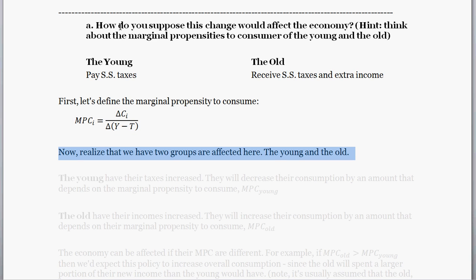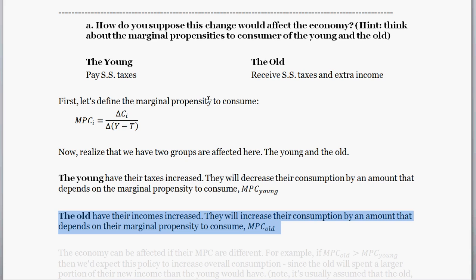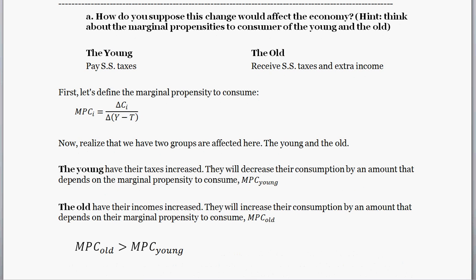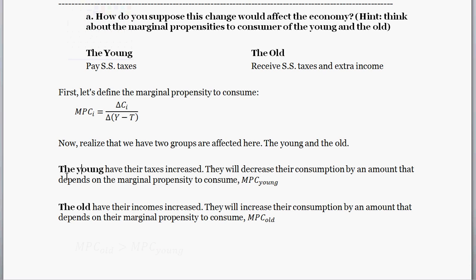There are two different groups: the young and the old. The young have their taxes increase, so they decrease consumption by an amount that depends on their marginal propensity to consume. The old have their incomes increased and will increase their consumption by their marginal propensity to consume. If the marginal propensity to consume of the young were exactly equal to that of the old, the overall economy would not be affected at all — for every decrease in spending by the young, the old consume that much more.